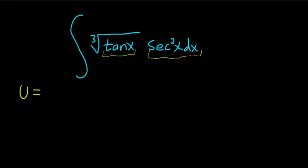Start by letting u be the tangent of x. Then your du, the derivative of tangent is secant squared x, and don't forget the dx.